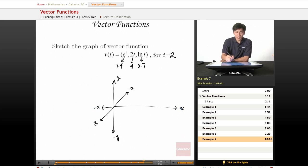Well, so x is 7.4. So let's go ahead and draw that. 7.4 is about here. y is 4. And z is 0.7.